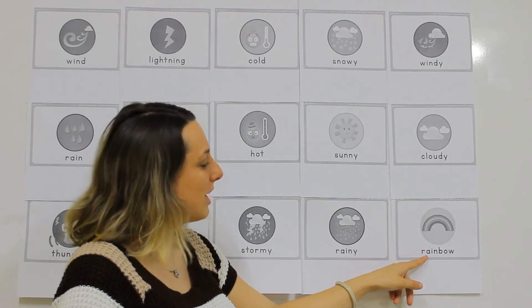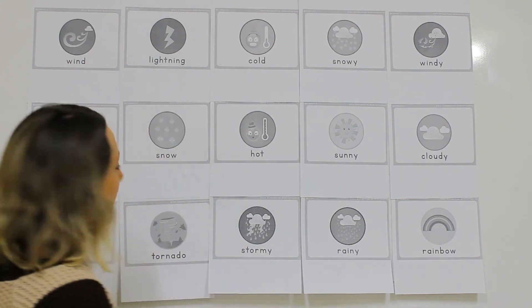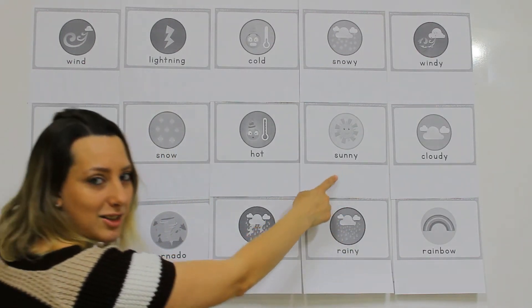A rainbow. Do you know how a rainbow appears? We need rain and sunshine.